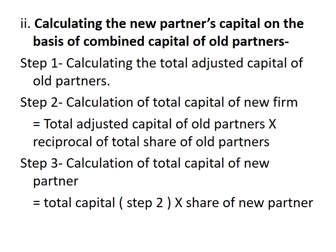Now let's look into the adjustment of capital by the other method: calculating the new partner's capital on the basis of the combined capital of all partners. Here we have three steps. Step 1: calculating the total adjusted capital of all partners. Step 2: calculation of the total capital of the new firm, which is the total adjusted capital of all partners divided by the total share of all partners. Step 3: calculation of the capital of the new partner, which is the total capital from step 2 multiplied by the share of the new partner.